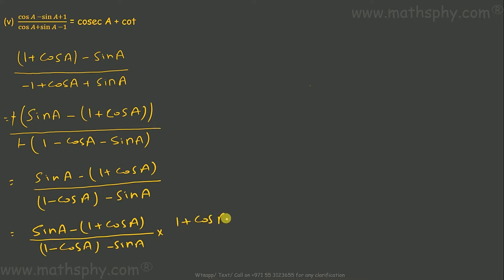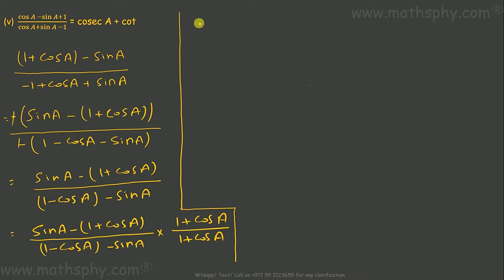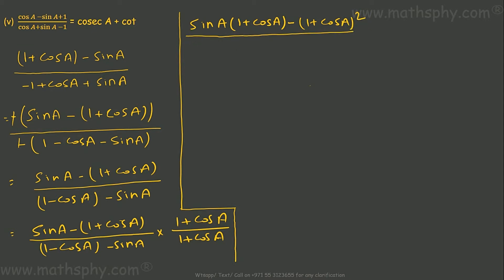Multiplying by (1 plus cos a) over (1 plus cos a). Multiplying this with 1 has no effect. This will give me sin a multiplied with this — sin a into (1 plus cos a). Minus this into this means (1 plus cos a) whole square. This is 1 minus cos a, this is 1 plus cos a — that means a squared minus b squared. And this would be minus sin a into (1 plus cos a).